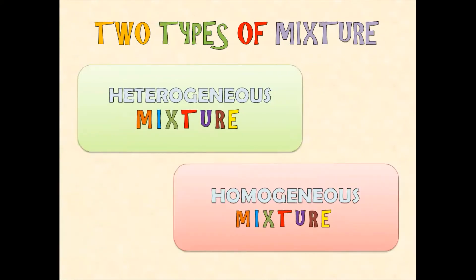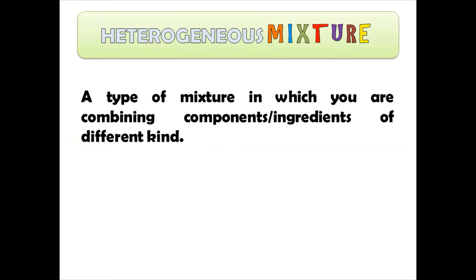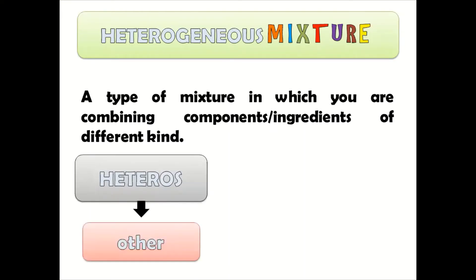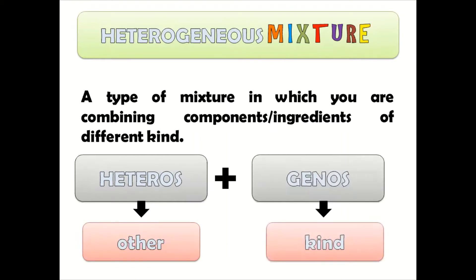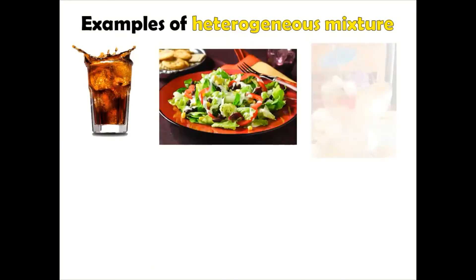We have two types of mixture: the heterogeneous mixture and the homogeneous mixture. For this lesson, we will focus first on discussing the heterogeneous mixture. Heterogeneous mixture is a type of mixture in which you are combining components or ingredients of different kinds, or combining components with non-uniform composition. Heterogeneous comes from the Greek words 'heteros,' which means 'other,' and 'genus,' which means 'kind.'